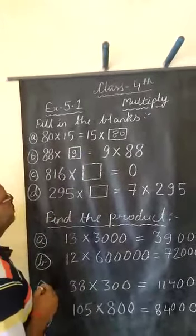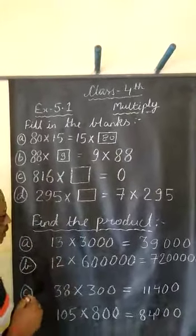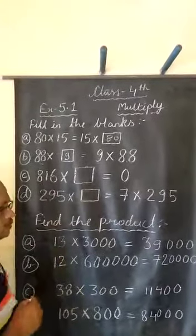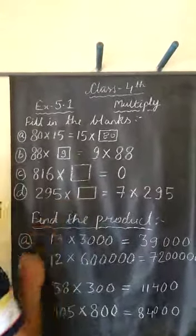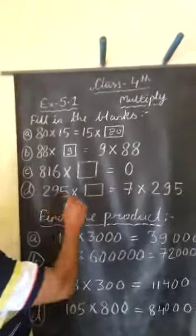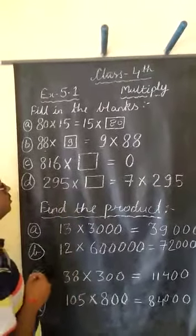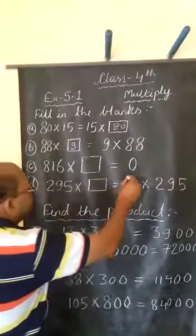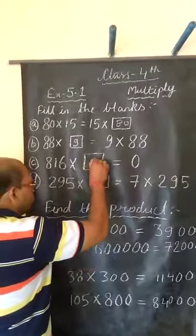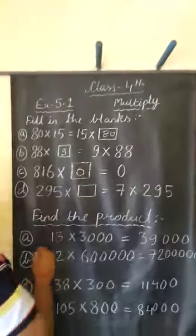Next question: what number should be multiplied by 816 to get a product of 0? From the properties of multiplication, we already know that any number multiplied by 0 gives a product of 0. So if our product is 0, the number must be multiplied by 0. We fill in the blank with 0.